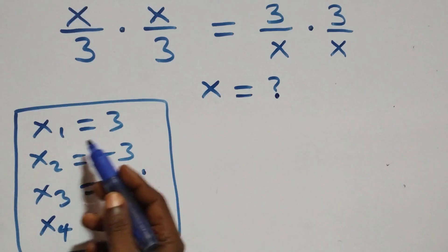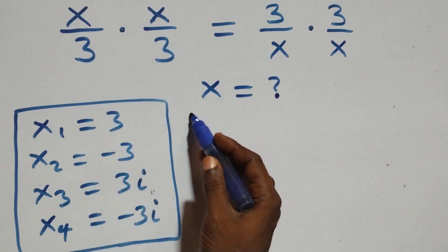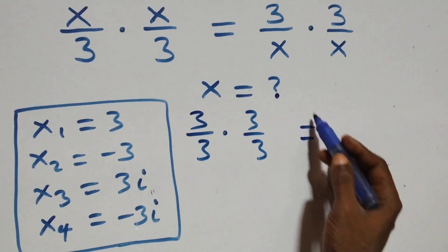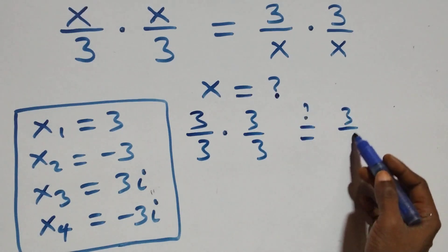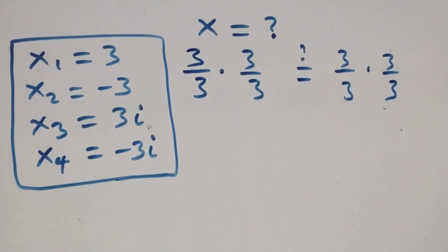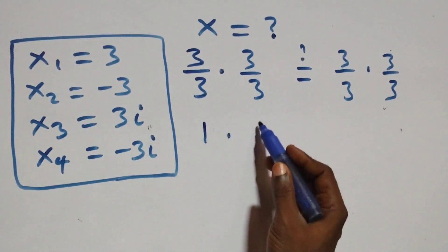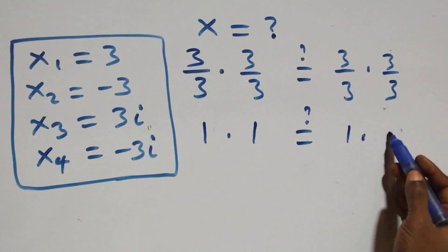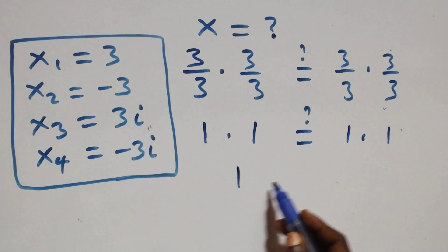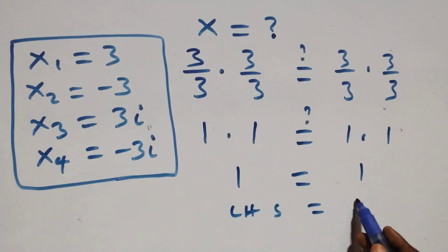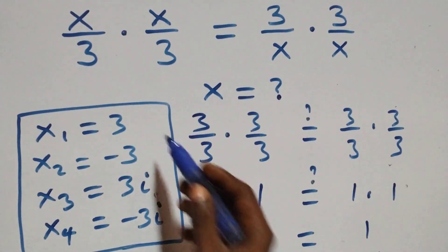For the first value of x, which is 3, this equation becomes 3/3 times 3/3, which is equal to 3/3 times 3/3. That is 1 times 1, which equals 1 times 1, that's 1. Left-hand side equals the right-hand side, so x = 3 satisfies this given problem.